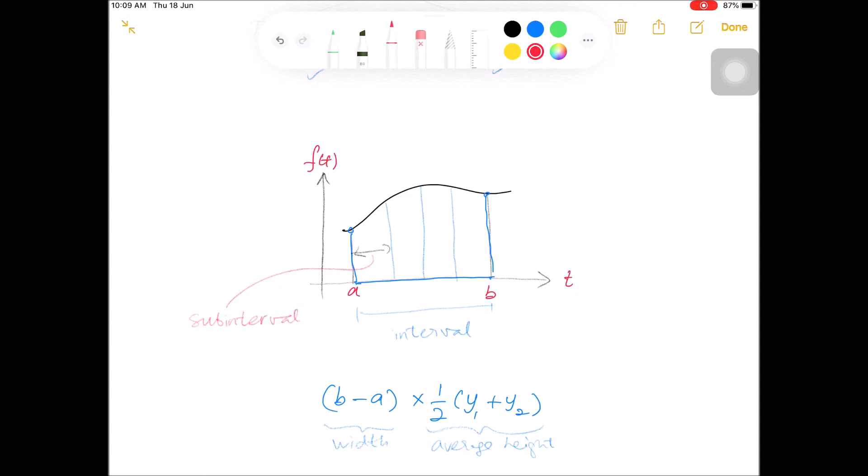So here we have five data points. One, two, three, four, five. Separated by four subintervals. Subinterval number one, number two, number three, number four.